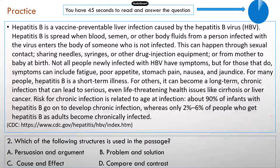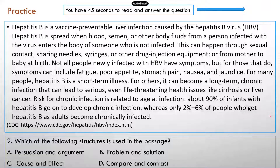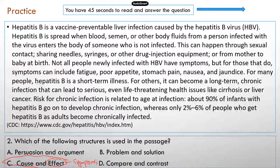Second question. The correct answer is C, cause and effect. Remember, this paragraph is all about hepatitis B — what causes hepatitis B — and the effect is the symptoms. So this is a typical cause and effect type of writing.